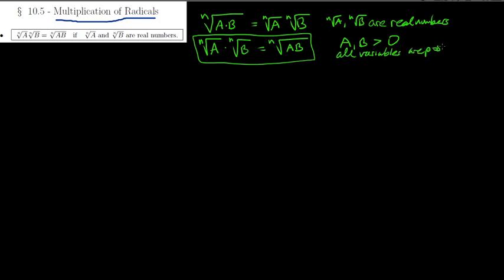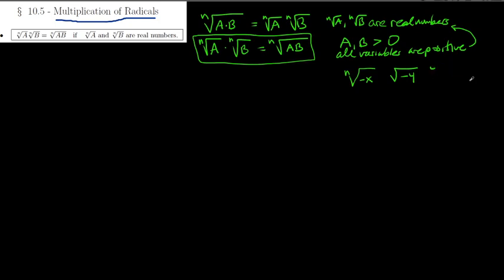Because of that condition, that ensures that everything is real. The only time you get an imaginary number is if you have the nth root of a negative number and n is even — like the square root of negative 4 or the fourth root of negative 7. Those would be imaginary numbers, and that's not going to come up in this section or the next. So let's just see how this works — let's do some examples.